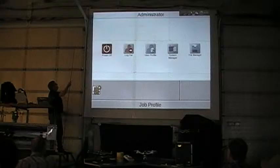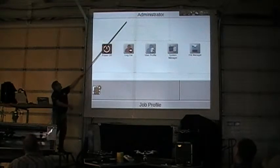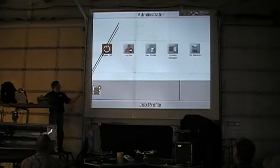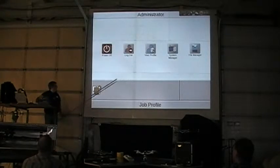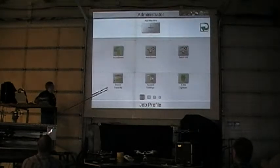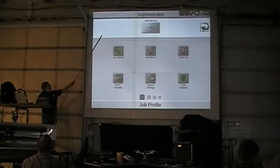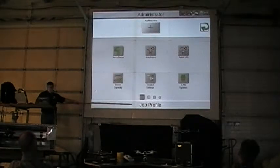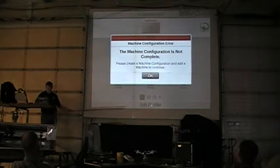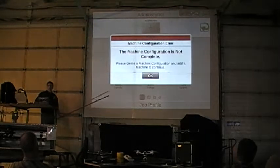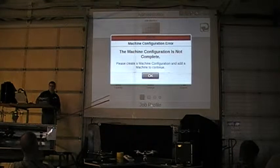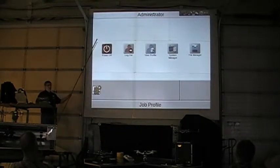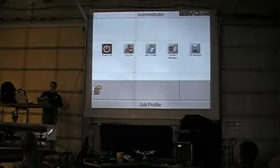I've pushed on the Administration tab that goes across the top. If I go down and push on this little box, it pulls up my machine information. If I push on the job profile at the bottom, the machine is not in danger so it's not going to let me get into a job. I'm going to go back to Administration and step by step go through this thing quickly.